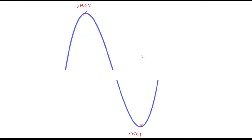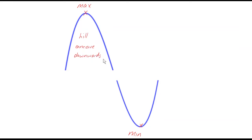To help us understand what's meant by a point of inflection, I've taken snippets of the graph around the local maximum point and the local minimum point. Around the local maximum we have a hill shape — mathematically this is described as concave downwards. Around the minimum point we have a valley shape, which is described correctly as concave upwards.